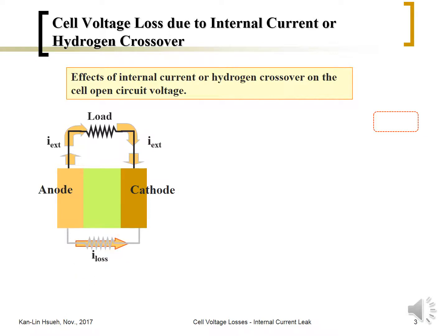In that case, the actual current the cell has to generate or produce equals the external circuit current plus the current lost. So i = i_ext + i_loss. From the Tafel equation, we can substitute this equation.